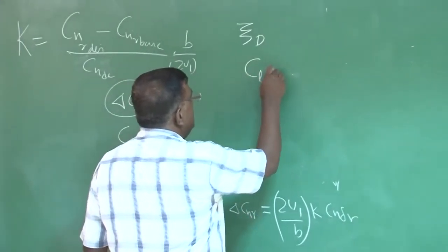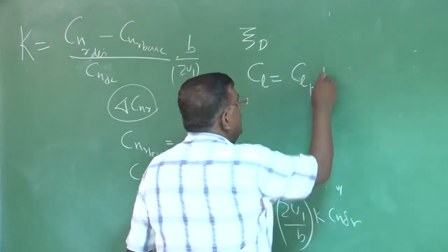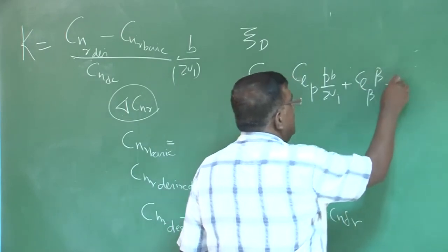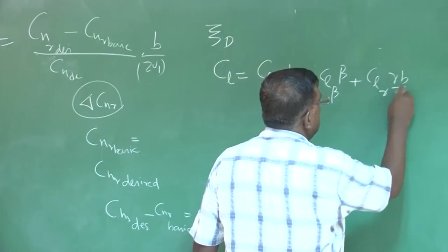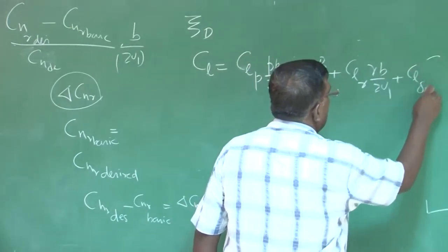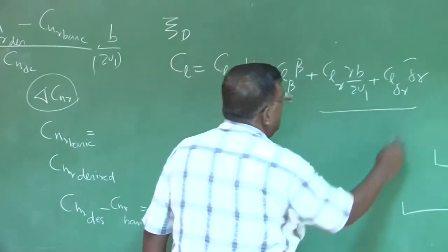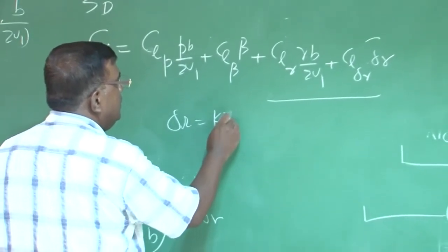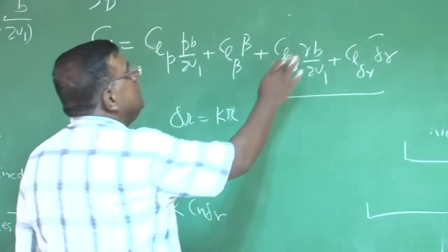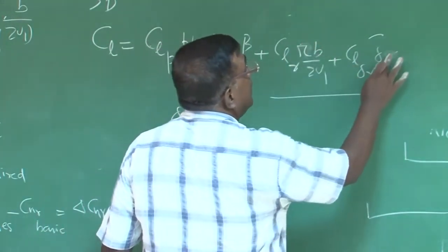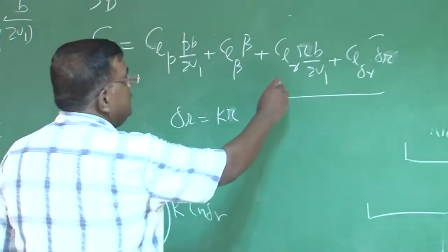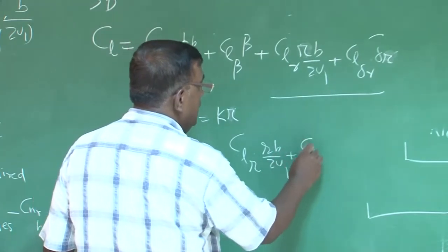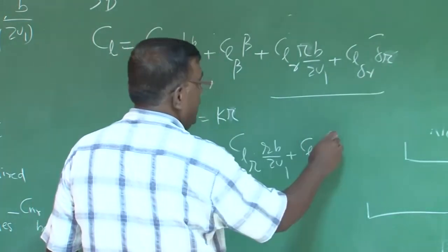For example, if I see rolling moment coefficient c l is c l p into p b by 2 u 1 plus c l beta into beta plus c l r into r b by 2 u 1 plus c l delta r into delta r. Now, check here, what is happening? You are putting delta r equal to k r, you are putting delta r equal to k r, this r, same thing, same notation, do not get confused, this is r and this is r. So, then check out here, it is c l r into r b by 2 u 1 plus c l delta r into delta r,